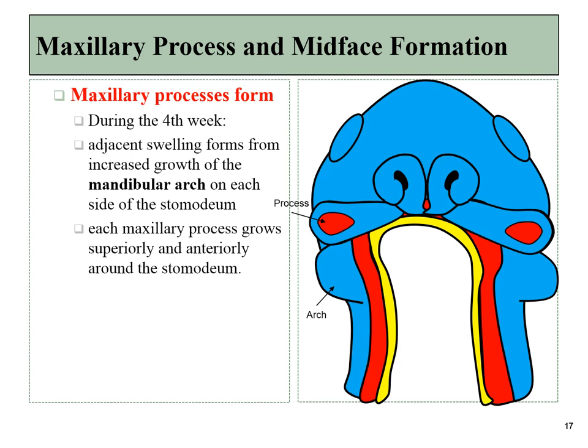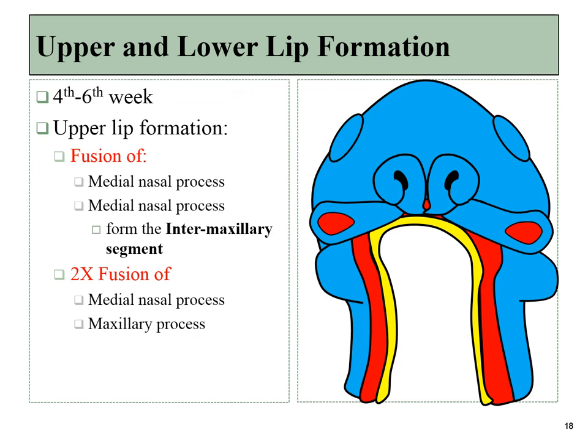These little bulges come off the mandibular arch, which we call the maxillary processes, and they will grow towards the midline. Unlike the mandibular arch, however, the maxillary processes are not going to fuse with one another — they're going to bump into the medial nasal processes. Therefore, the upper lip forms from two separate structures: the pair of maxillary processes growing from the sides, and the fusion of the medial nasal processes along the midline. When the two medial nasal processes fuse, they form a single intermaxillary segment, which forms the philtrum, while the rest of the upper lip is formed by the maxillary processes. This is in contrast to the lower lip, which was formed by the fusion of the pair of mandibular arches.